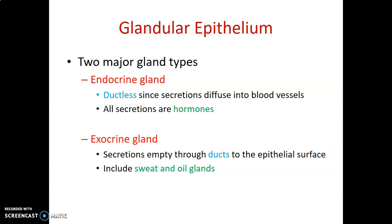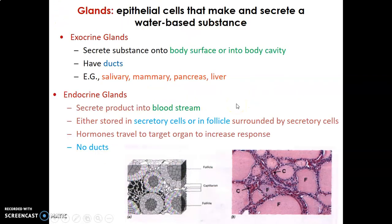We have two types of glands: endocrine and exocrine. Exocrine glands have ducts, so they empty secretions through ducts. Good examples are sweat glands, oil glands, salivary glands, and parts of the pancreas. Endocrine glands are ductless and commonly produce hormones. Good examples are the hypothalamus and pituitary in the brain, the thyroid and parathyroid in the neck, and other endocrine glands like the testis and ovaries.